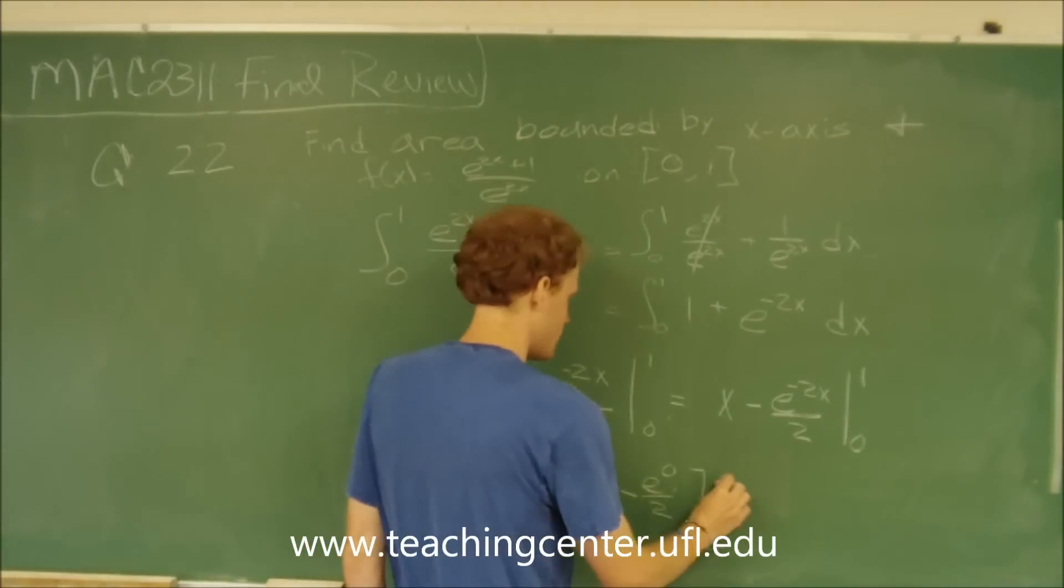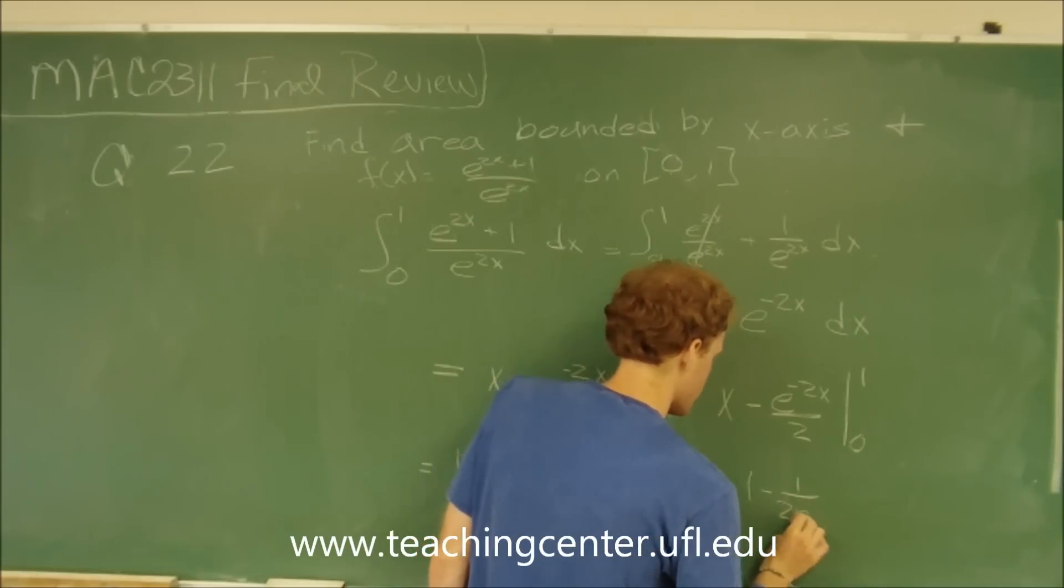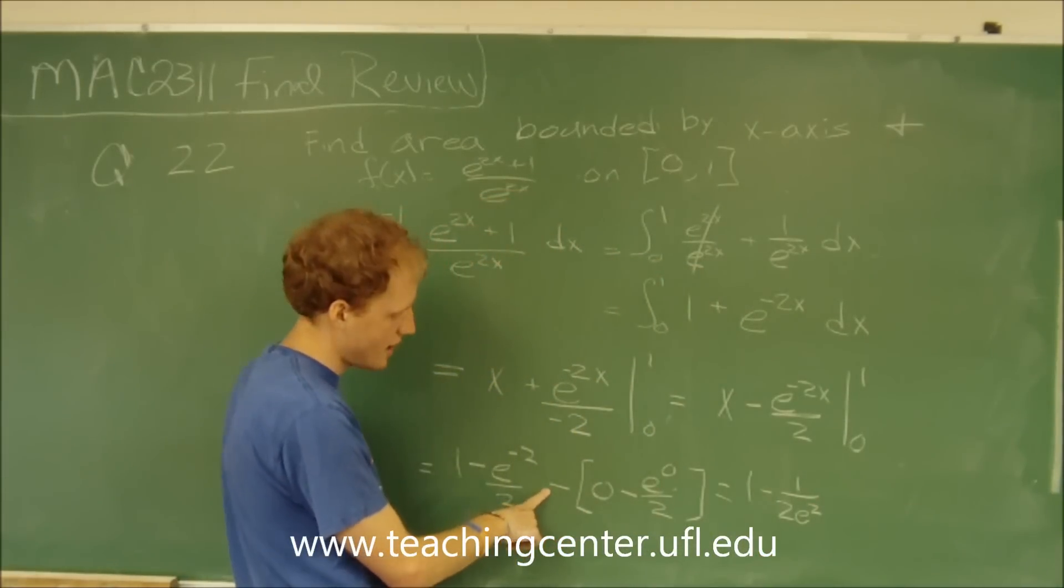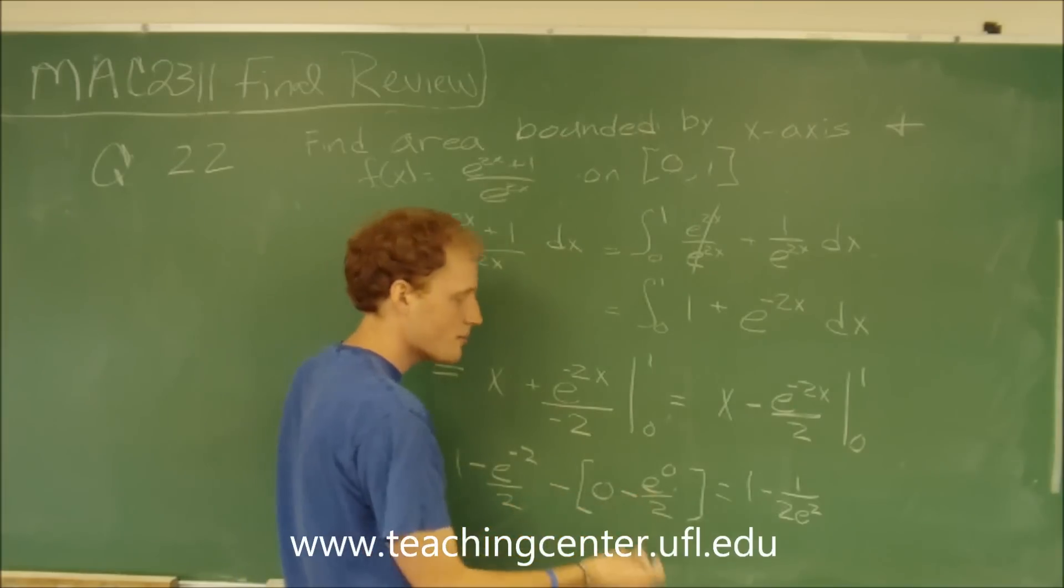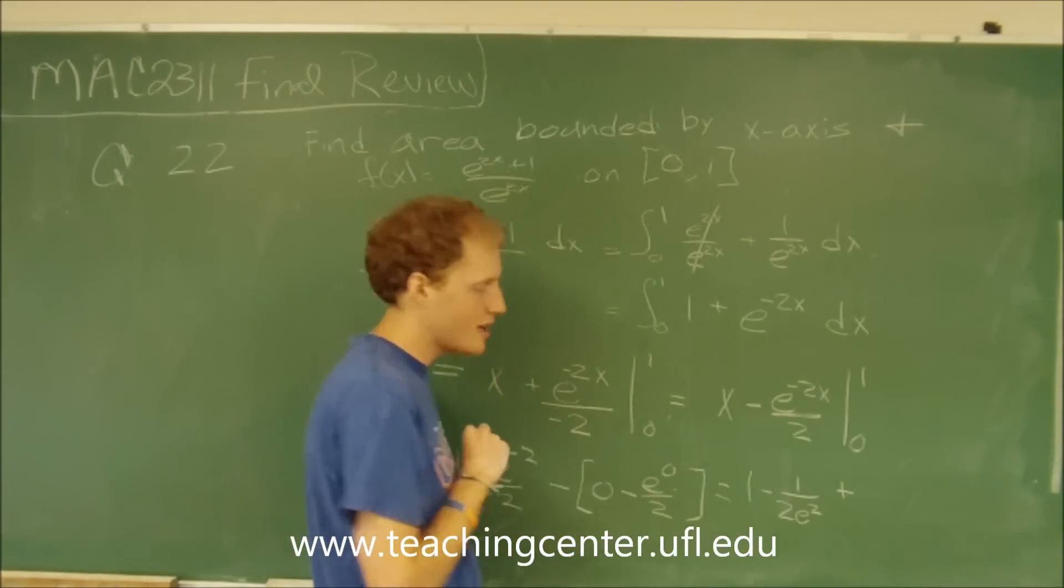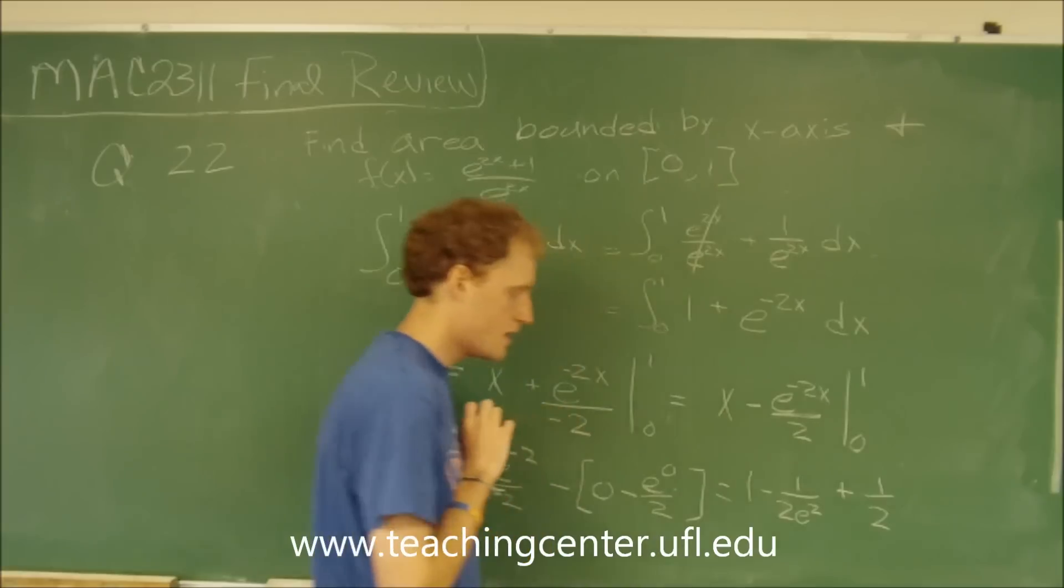This will simplify to 1 minus 1 over 2 e squared. Distribute the negative sign. We'll get negative, negative, plus. So plus e to the 0 is 1 over 2.